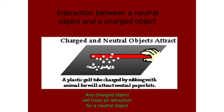There are also electrostatic interactions between a neutral object and a charged object. Here we can see a situation where we have a plastic golf club tube, and it's been charged by rubbing it with animal fur, so it has a charge on it. And when we bring that tube next to some pieces of paper that are neutral, it will attract the paper.